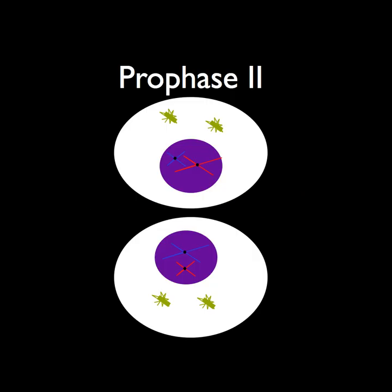This is the start of meiosis 2, in prophase 2. In prophase 2, spindle fibers start to appear in each daughter cell by the centrials, and a nuclear envelope in each cell that was formed until phase 1 dissolves. The chromosomes begin to prepare for metaphase 2.